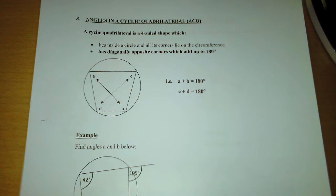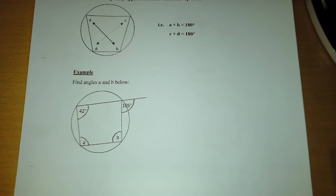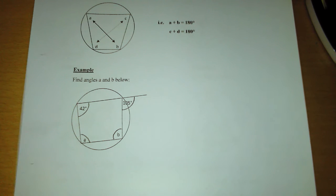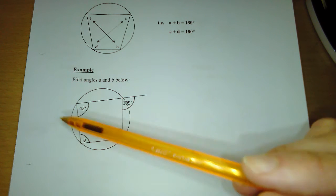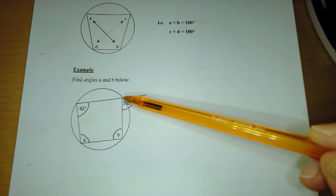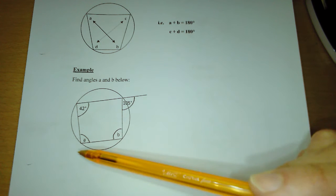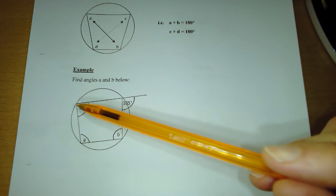Okay, so we're now going to apply circle theorem number three, angles in a cyclic quadrilateral. You can see our circle diagram. We clearly have a cyclic quadrilateral because all the corners of the quadrilateral lie on the circumference of the circle.